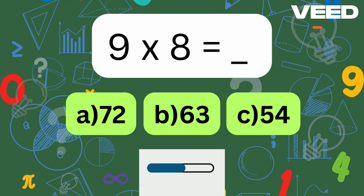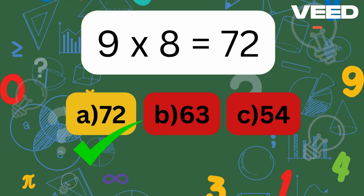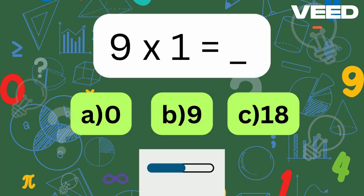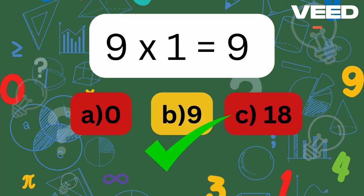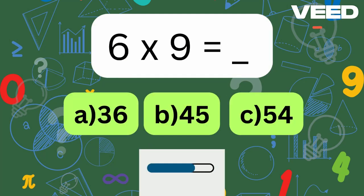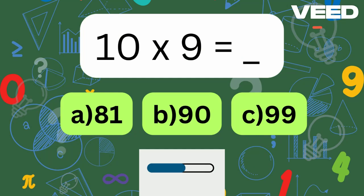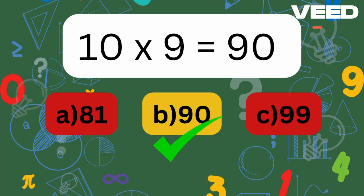9 times 8 is... 9 times 8 is equal to 72. 9 times 1 is... 9 times 1 is equal to 9. 6 times 9 is... 6 times 9 is equal to 54. 10 times 9 is... 10 times 9 is equal to 90.